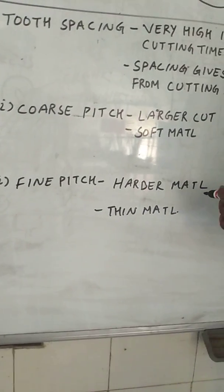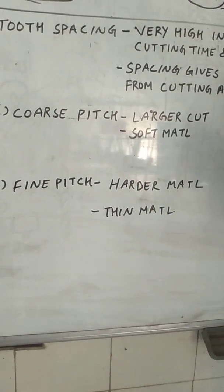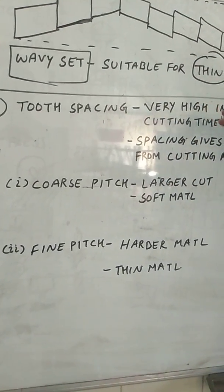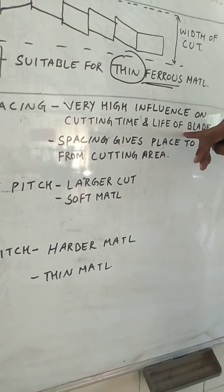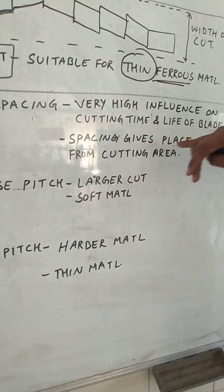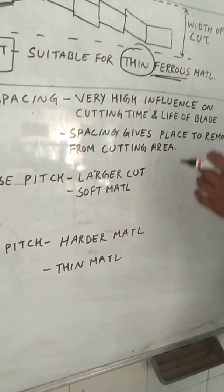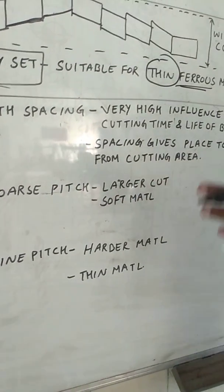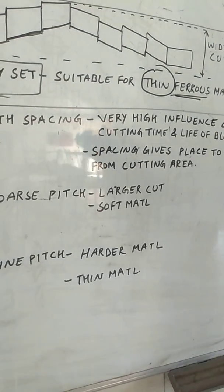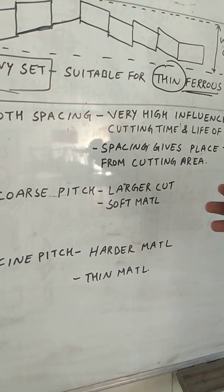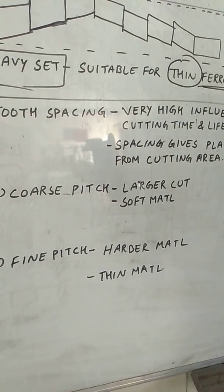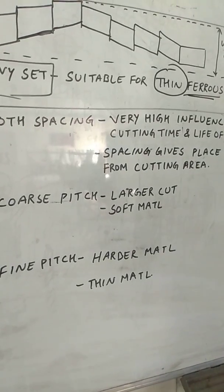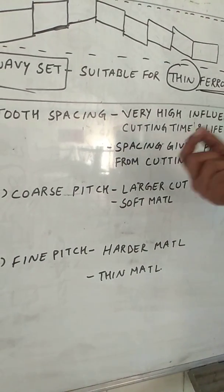In fine pitch, this type of pitch is used for harder material as well as for thin material. Tooth spacing has more influence on the cutting time and life of the blade. Spacing gives a place for removal of the chip. When you are doing a cutting operation, it produces chips. If chips remain in that cutting area, then it will restrict the cutting operation as well as damage the teeth of the blade.